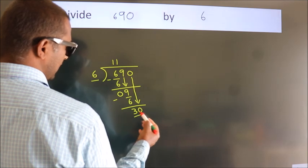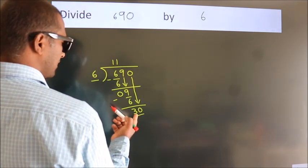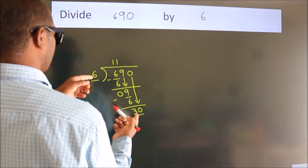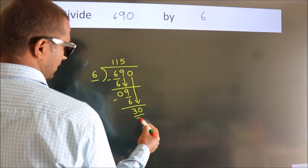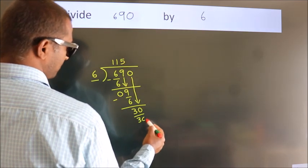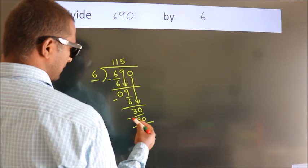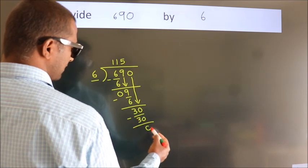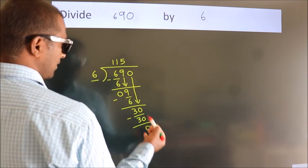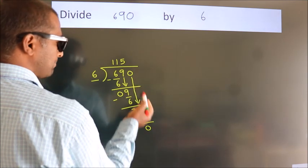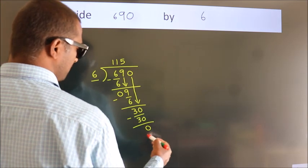So, 0 down. So, 30. When do we get 30 in the 6 table? 6 fives, 30. Now we subtract. We get 0. After this, no more numbers to bring down, so we stop here.